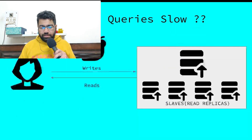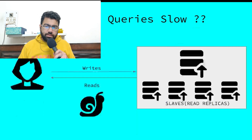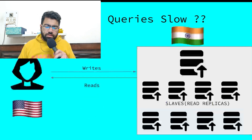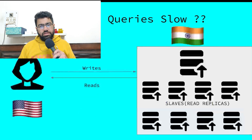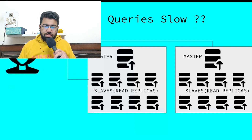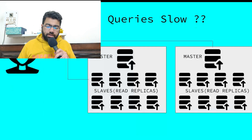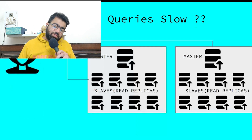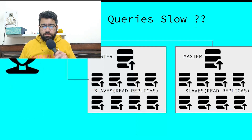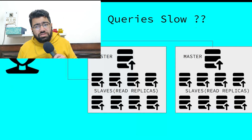This sharding approach is called horizontal scaling, while increasing the size of the master or replicas is called vertical scaling. So we have now covered both horizontal and vertical scaling, and we've addressed location issues by creating database replicas in different geo-locations. But your database is still slow — now comes the use of a cache.